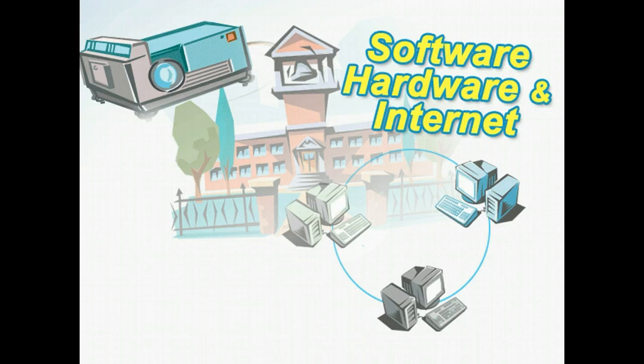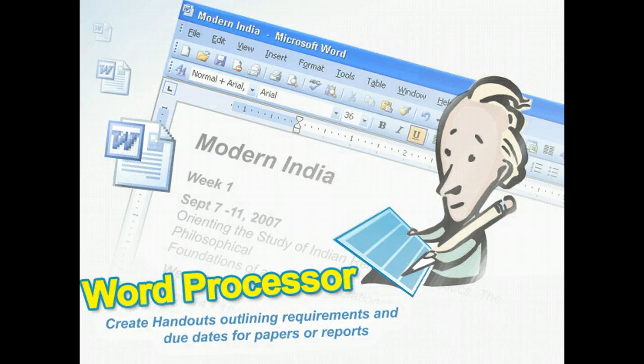You may already be aware of some of the main types of technology you'll come in contact with at school: software, hardware, and the internet. We're going to look at examples of each of these types of technology and ways in which they can be used. Let's start with software. You'll find many uses for applications such as those from the Microsoft Office system.